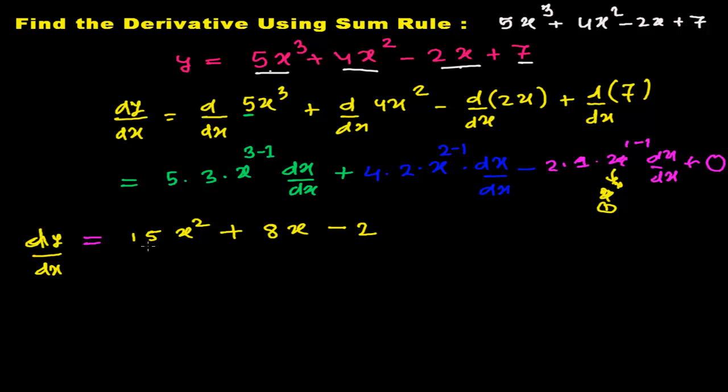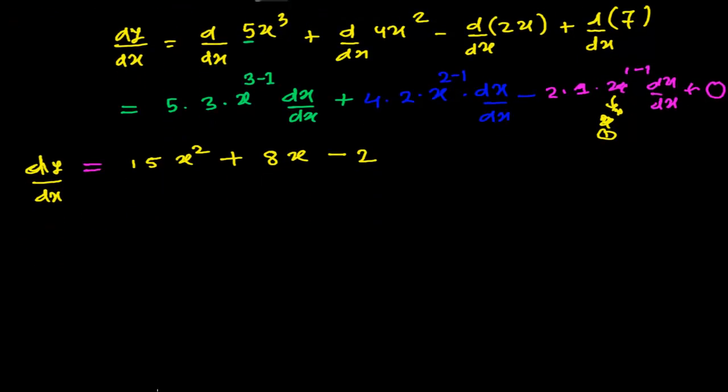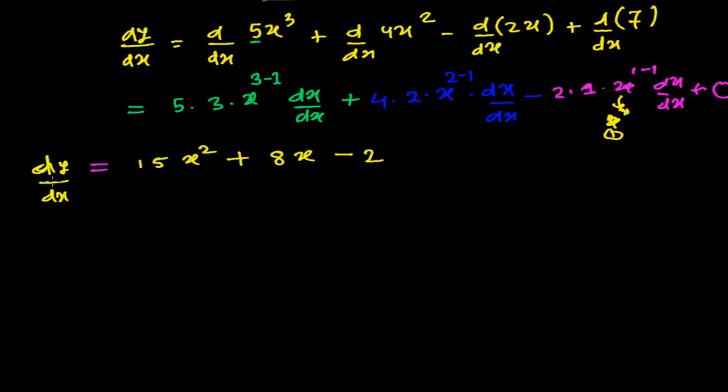This is my derivative. Dy by dx is 15x squared plus 8x minus 2. And once you get perfect, you can easily do it and faster you can do. I'm just giving you here a simple example.